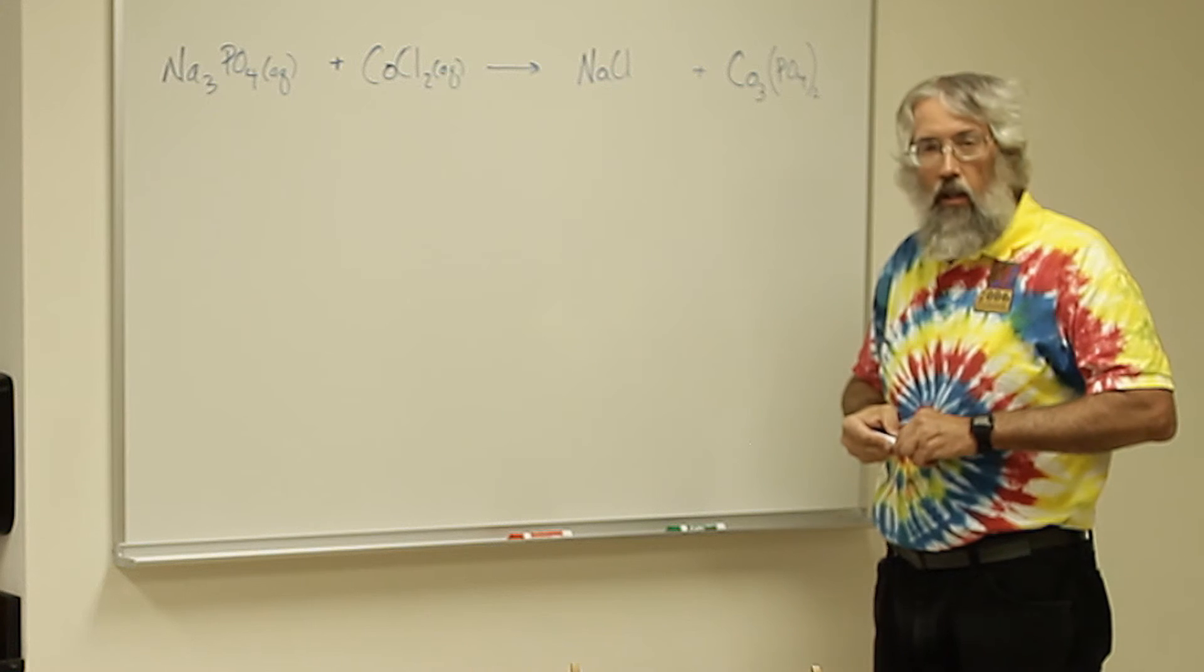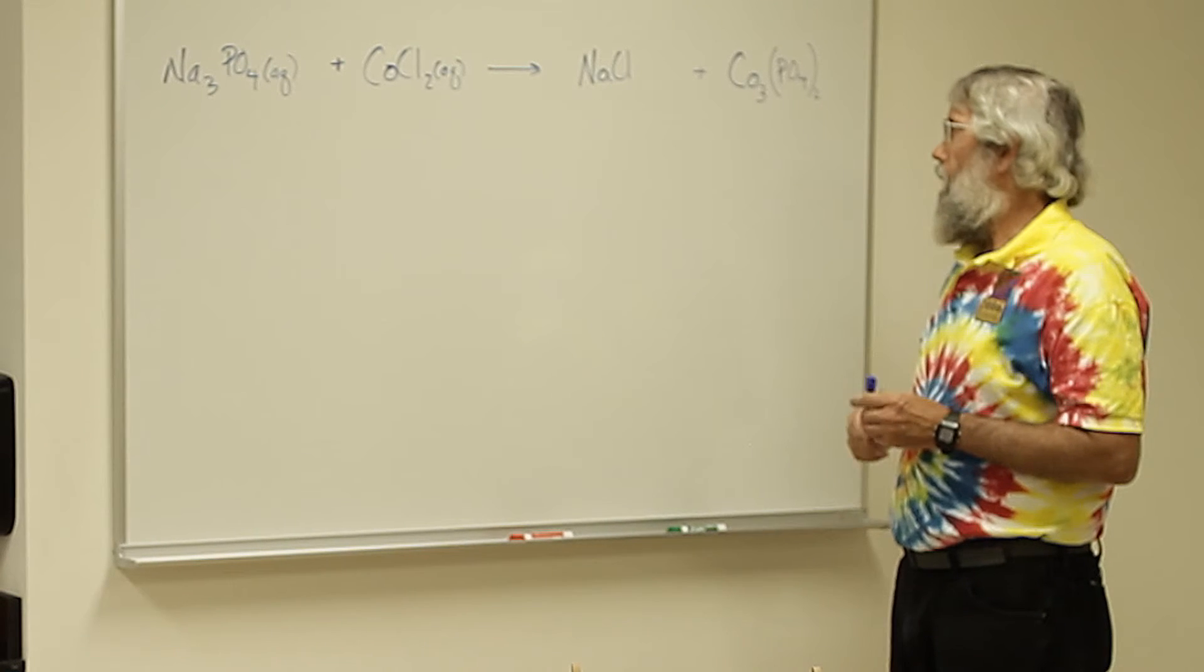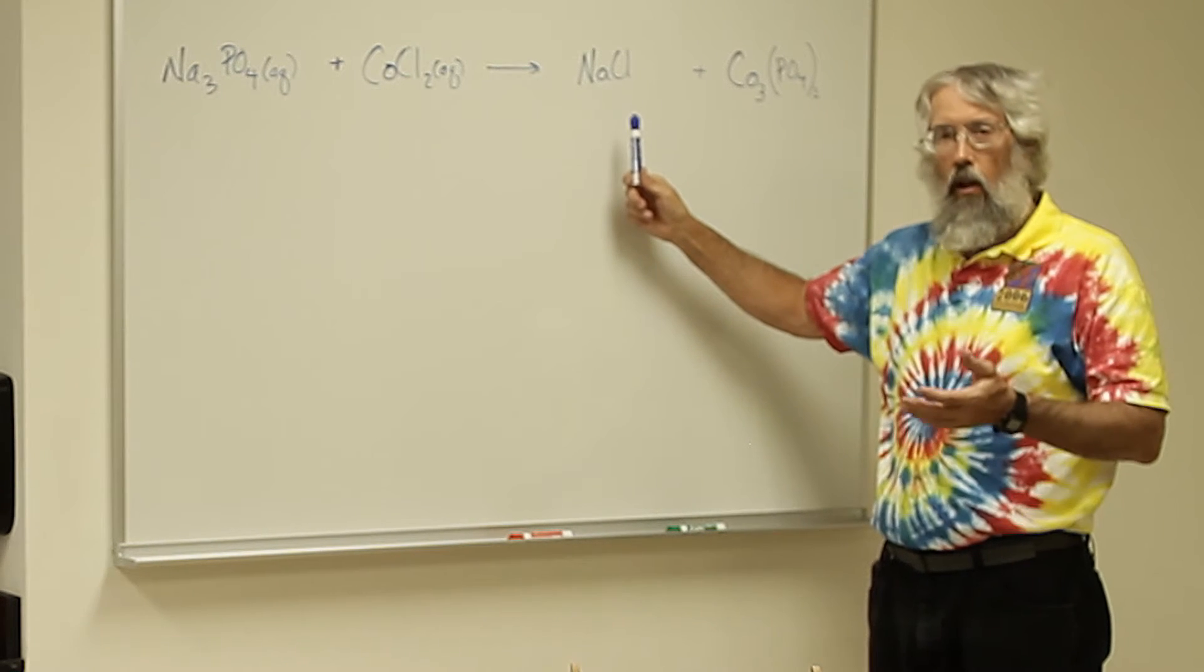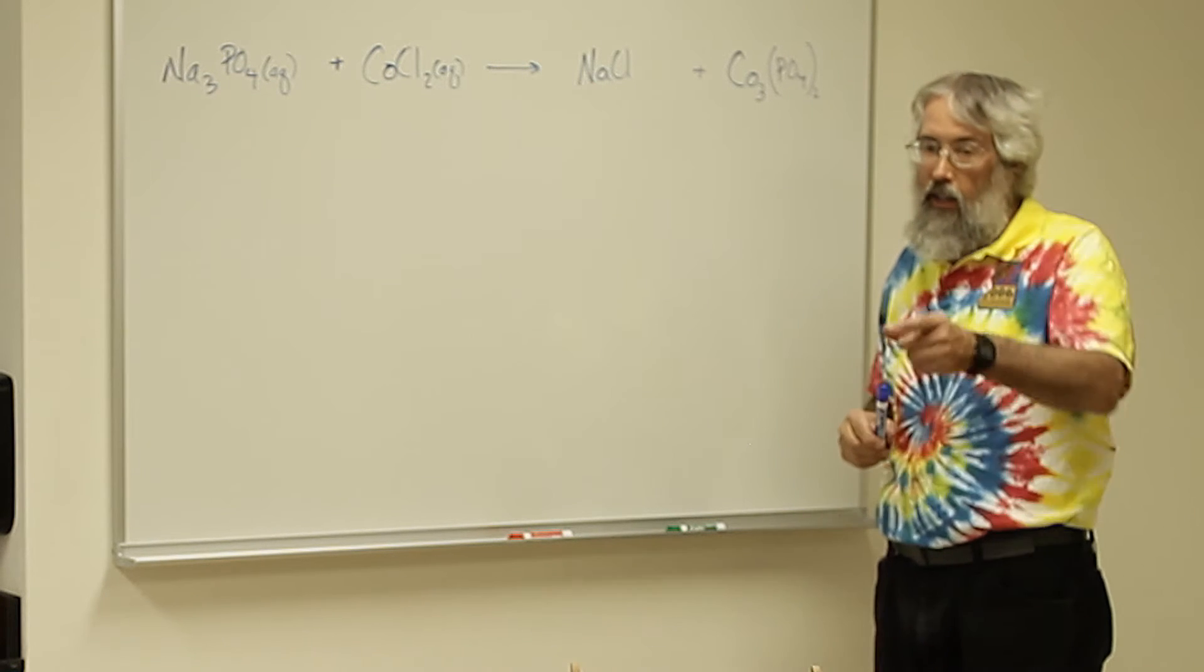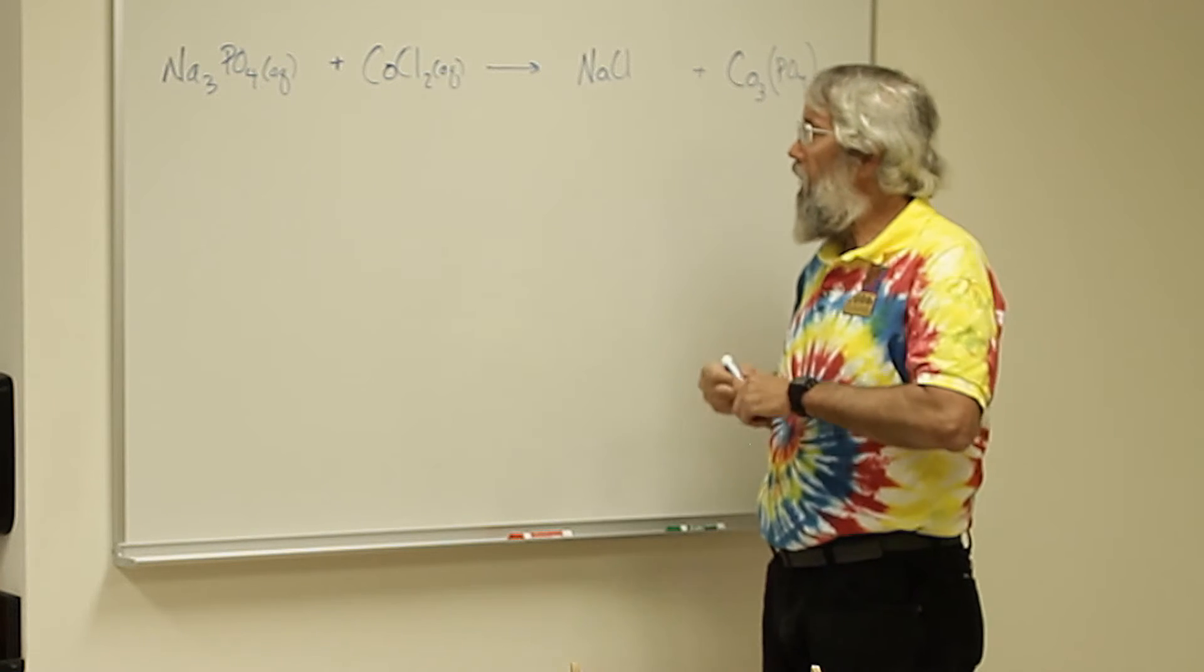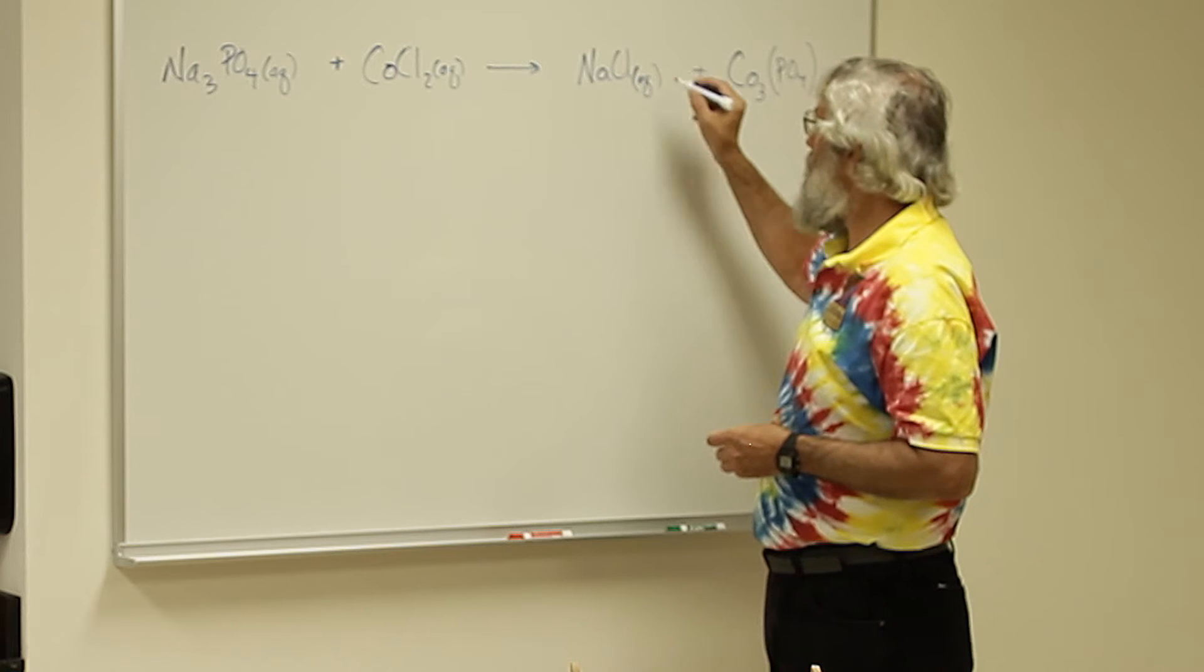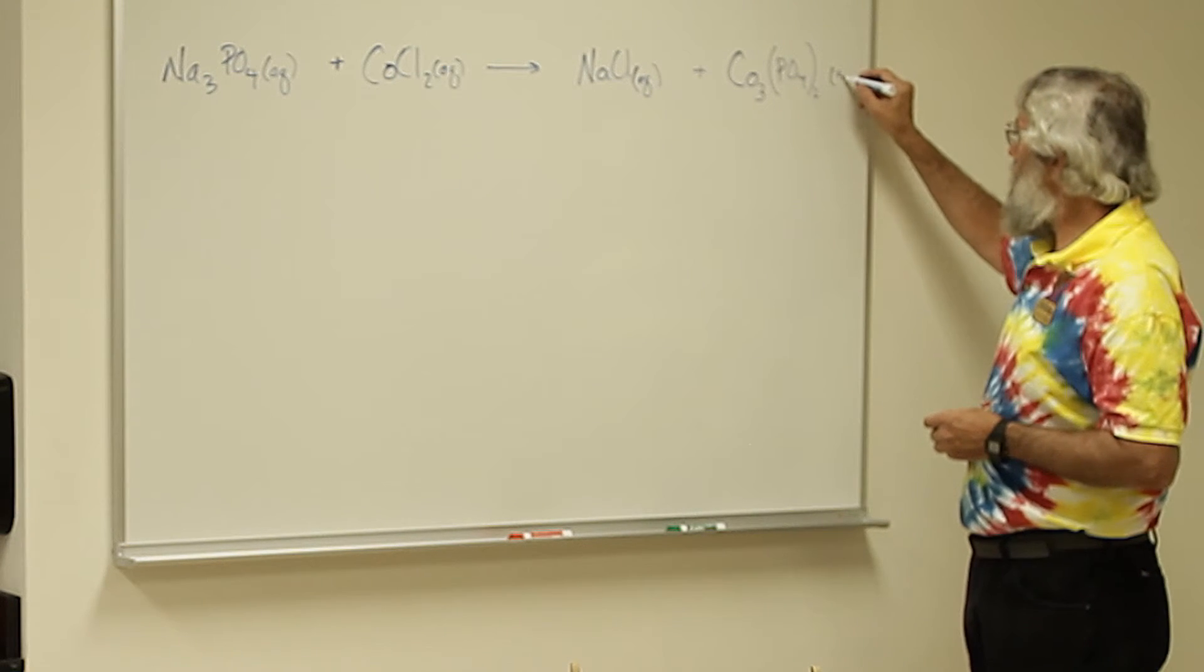One of these is a precipitate and the other one is not. Now you're all familiar with sodium chloride. That's table salt, and table salt dissolves in water very easily and it's not purple in color. So we know that the sodium chloride must be present in aqueous solution, which means that it's the cobalt phosphate which is the solid.